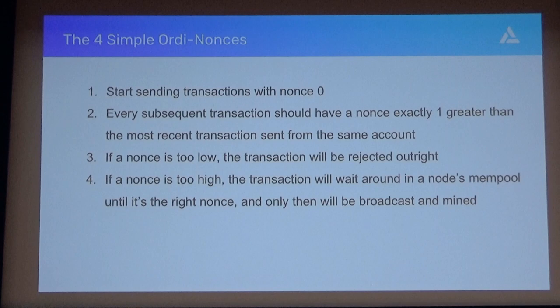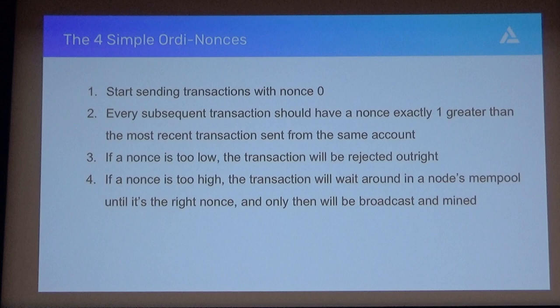So let's start with four simple nonce rules. Number one, if you're starting from scratch, super easy—your nonce is zero. For most cases it doesn't get too much more difficult: you just increment by one. It's a counter, straightforward. The rules that start getting interesting are what happens if things go wrong. If your nonce is too low, you know right away—it's not too big a deal. The node will reject it, your request will fail, and it will say 'nonce too low,' so you can pretty easily increment and resubmit.